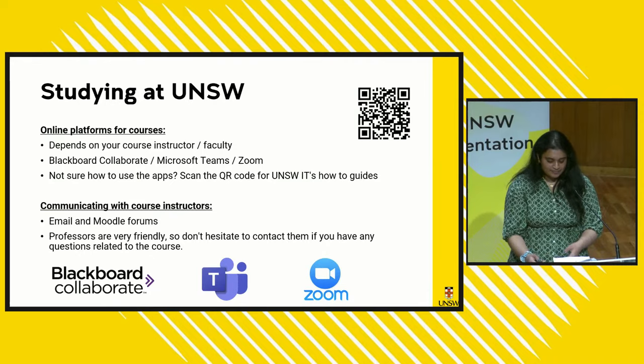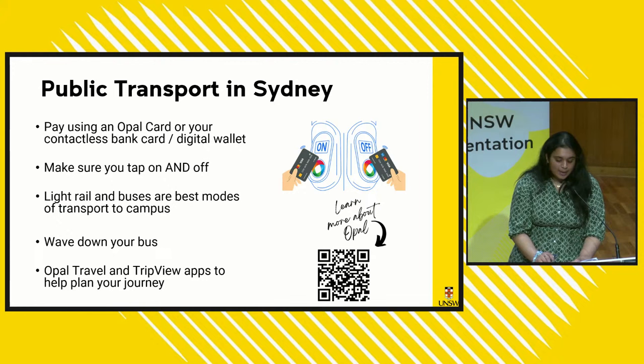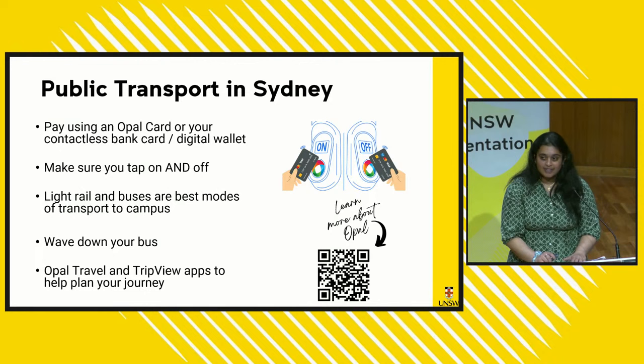If you haven't had a chance to explore outside of campus yet, there are some important things you should know regarding public transport around Sydney. All international, study abroad and exchange students are eligible for an adult Opal card only — not a student or concession Opal card. You can also pay with a contactless bank card or a digital wallet on the Opal reader on buses, trains, light rails and ferries. Make sure you tap off using the same card that you tapped on with.